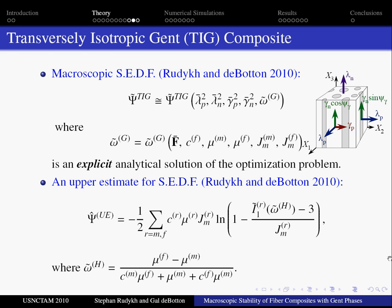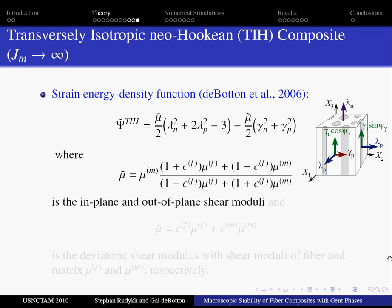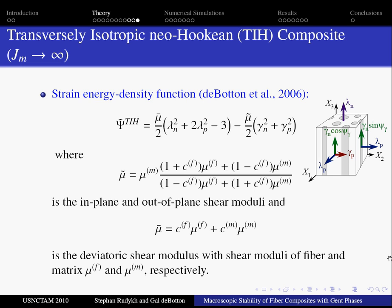Moreover, a new upper estimate for the macroscopic strain energy density function of the composite with Gent phases was introduced in this compact form. When the locking parameter jm goes to infinity, the strain energy density function does indeed reduce to the one introduced by de Botton and others in 2006 for the composites with neo-Hookean phases. Here mu tilde is in-plane and out-of-plane shear moduli, and mu bar is the de Botton's shear modulus.